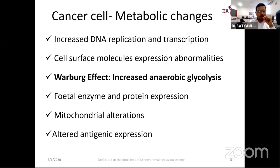And mitochondrial alterations: the mitochondria is the key organelle deciding whether a cell lives or dies because it is the energy powerhouse. The mitochondria also decides via apoptosis whether the cell will live or not. There are also abnormalities in the mitochondria of a cancer cell. And finally, altered antigenic expression — a cancer cell does not give out normal antigens; it gives out different antigens.